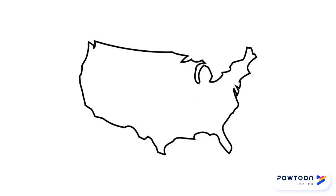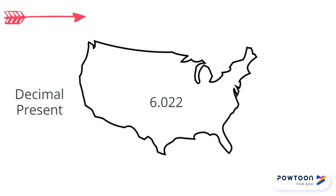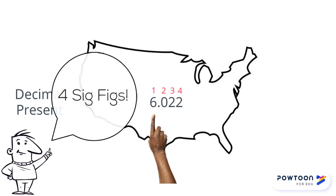What about scientific notation? For example, 6.022 times 10 to the 23. This may seem really difficult, but it's not. We're going to simplify by just looking at the number in front and ignoring the 'times 10 to the 23.' So for this one, we're just going to look at 6.022 and use the same rules. Is there a decimal present? Yes — start on the Pacific, left, and count toward the right. The first number is not zero, so we start counting there and count all the rest — four sig figs.